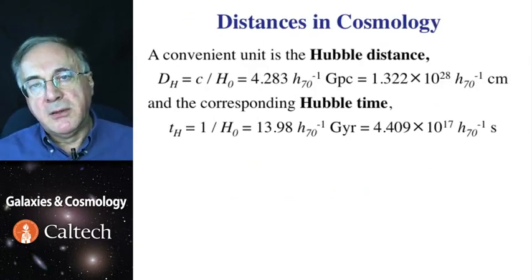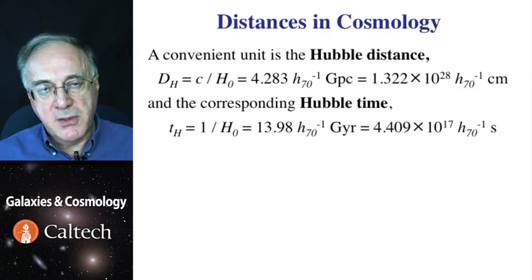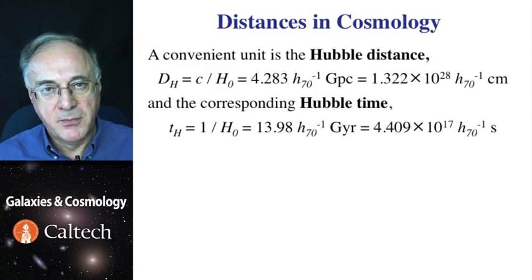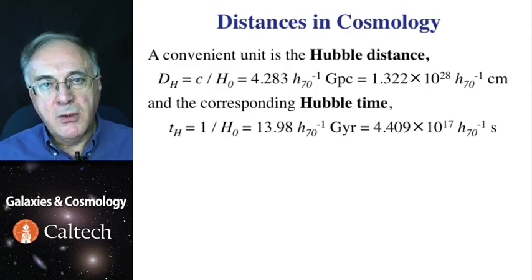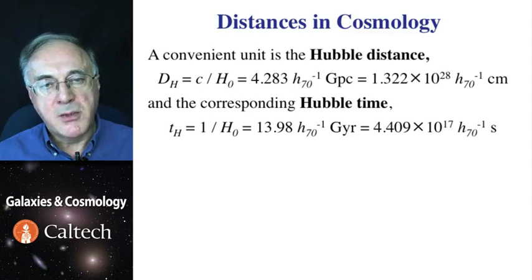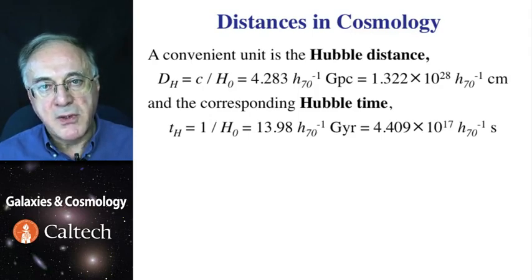A convenient unit of distance is Hubble distance, which is simply speed of light divided by the Hubble constant. Recall that Hubble constant has dimensions of one over time. And obviously, one over Hubble constant is called Hubble time. In the units of Hubble constant of 70 kilometers per second per megaparsec, which is close to its actual measured value, Hubble length is about 4.3 gigaparsecs, and Hubble time is a little shy of 14 billion years, which is actually pretty close to the actual age of the universe.